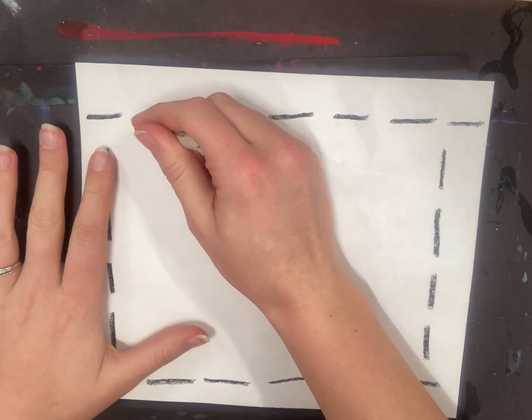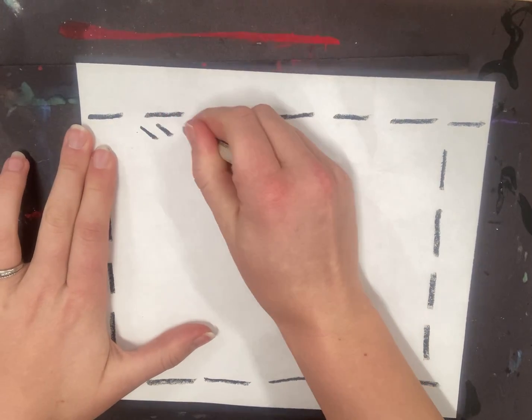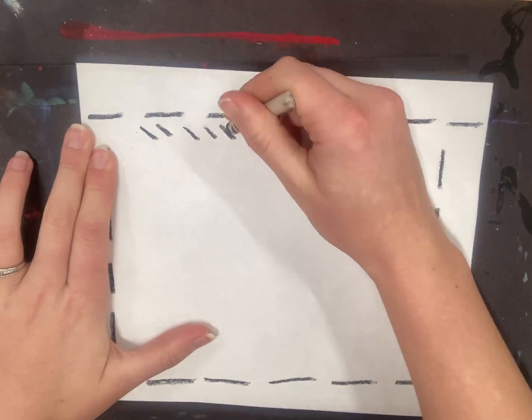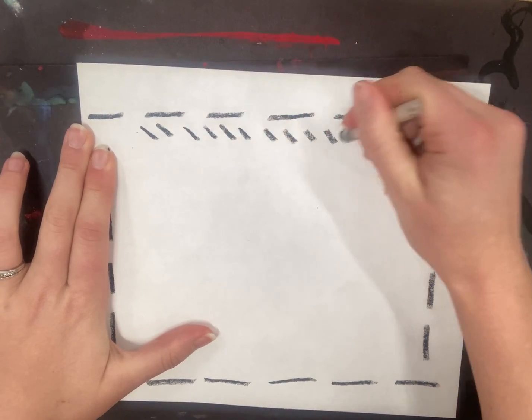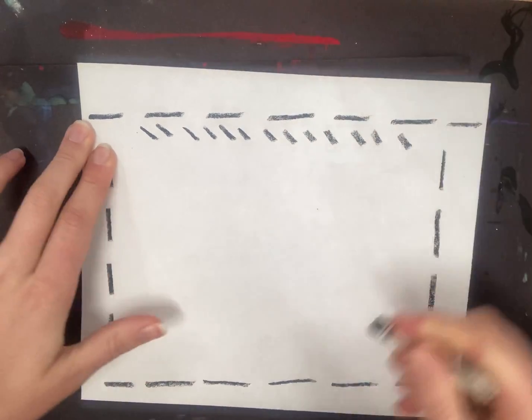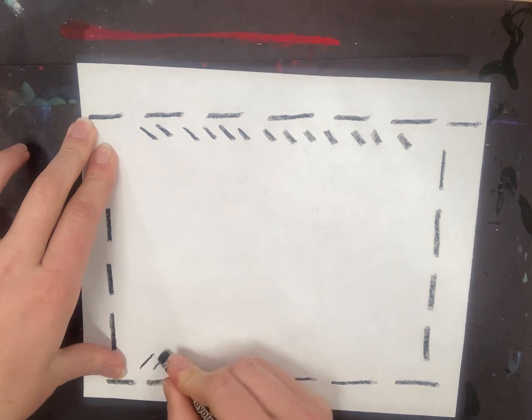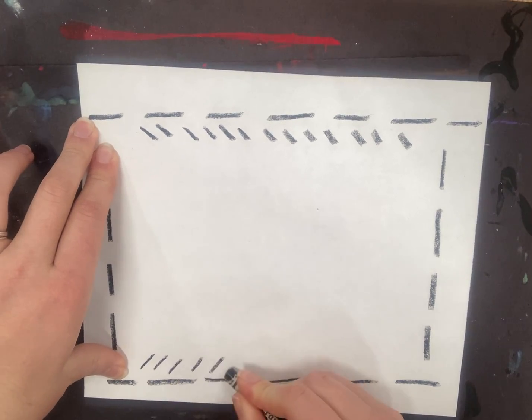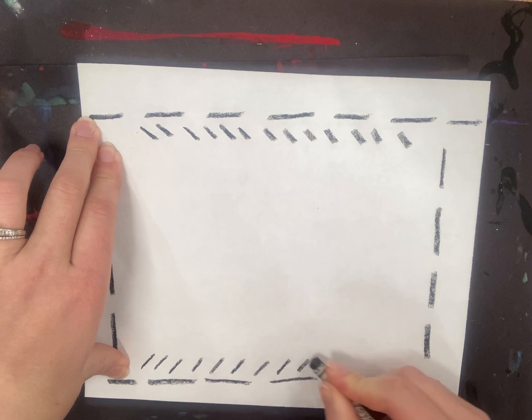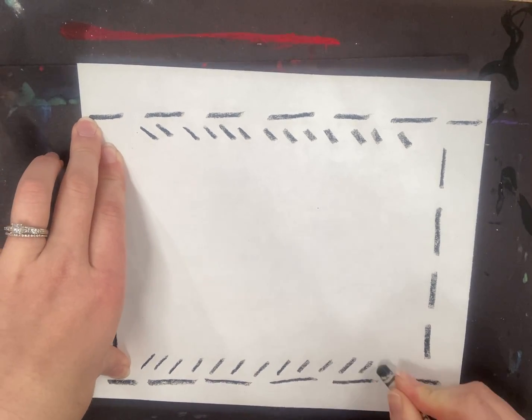I also see a couple of diagonal lines. So these lines are going a couple different places on my paper. I see them at the top of my paper. I see them toward the center to help make those triangles. And then I also see them on the bottom. You don't have to copy mine exactly. You can create your own patterns.